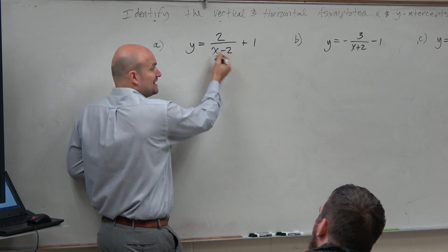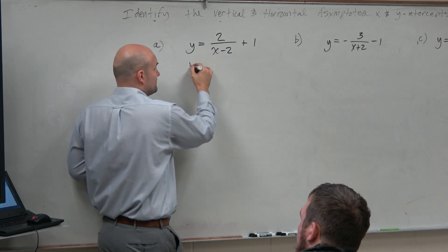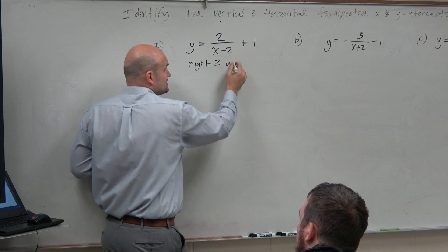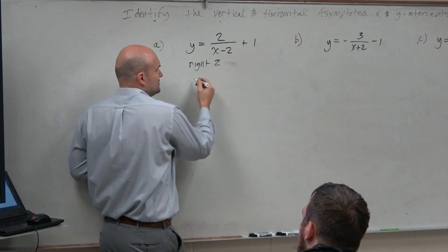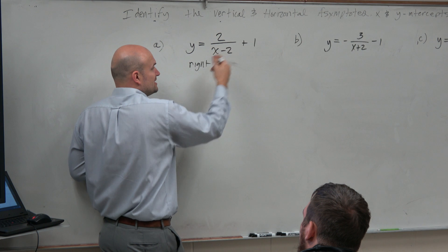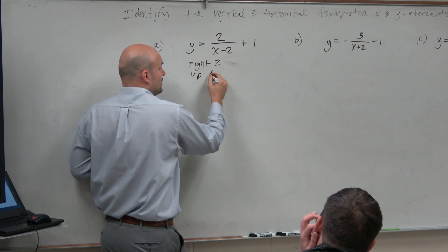If I have this minus 2, that means I'm shifting the graph right two units, right? Correct. Don't forget the right two units. If I'm adding the 1 outside the function, that's shifting the graph up 1.